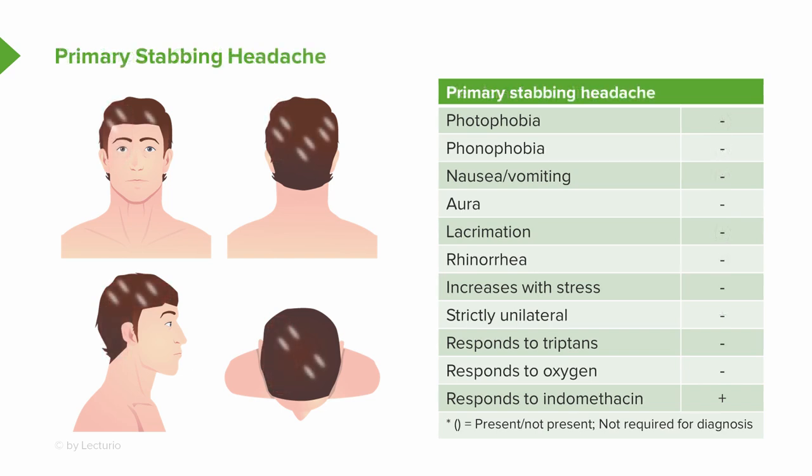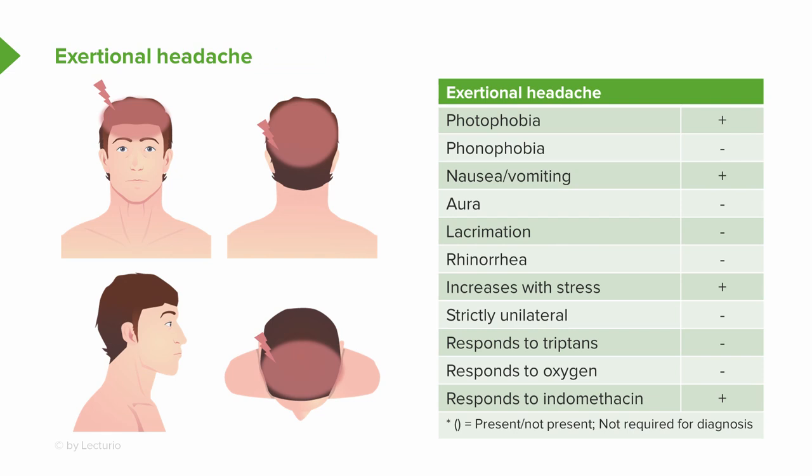There are also rare causes of headache important to know. Primary stabbing headache is exactly like it sounds — a very quick, sharp, stabbing pain like a knife being dug into the brain, presenting with short stabs and clustered episodes of stabbing pain. It is indomethacin responsive, again an important diagnostic and treatment intervention. Exertional headache, as it sounds, is a headache induced by exertion or stress. It can be indomethacin responsive and presents with varying degrees of nausea, vomiting, and photophobia, as many of us may have experienced.